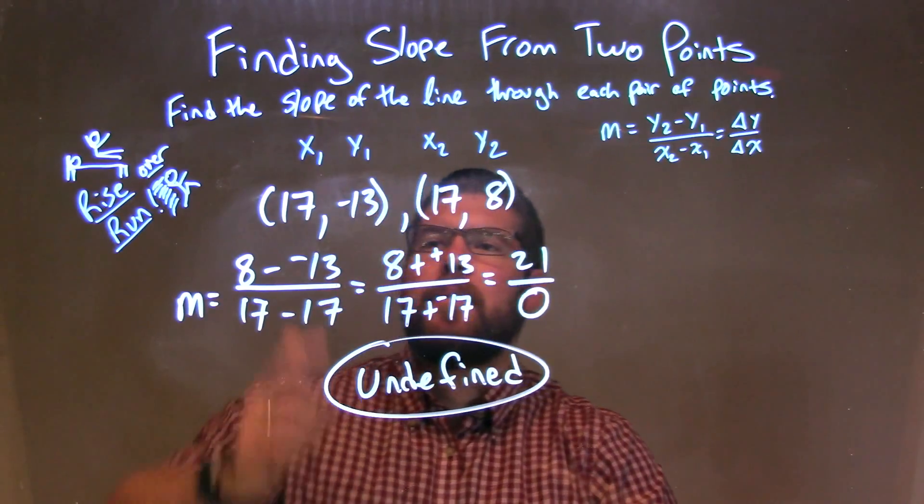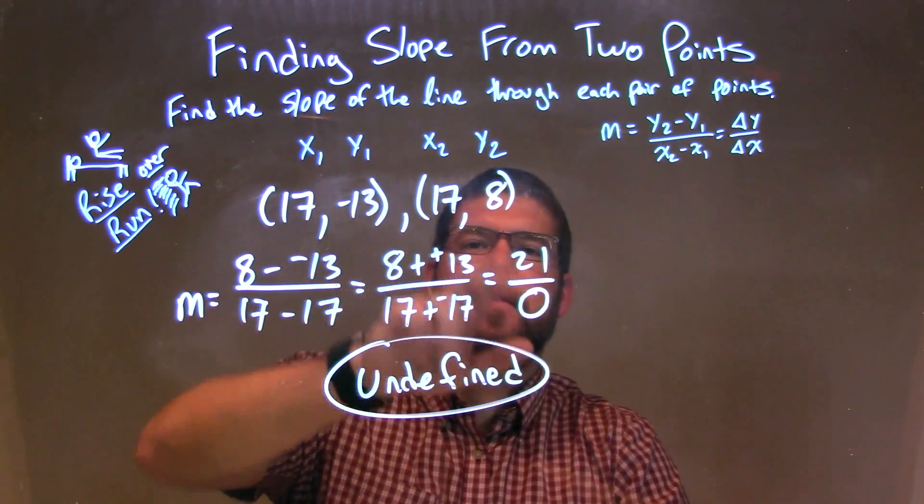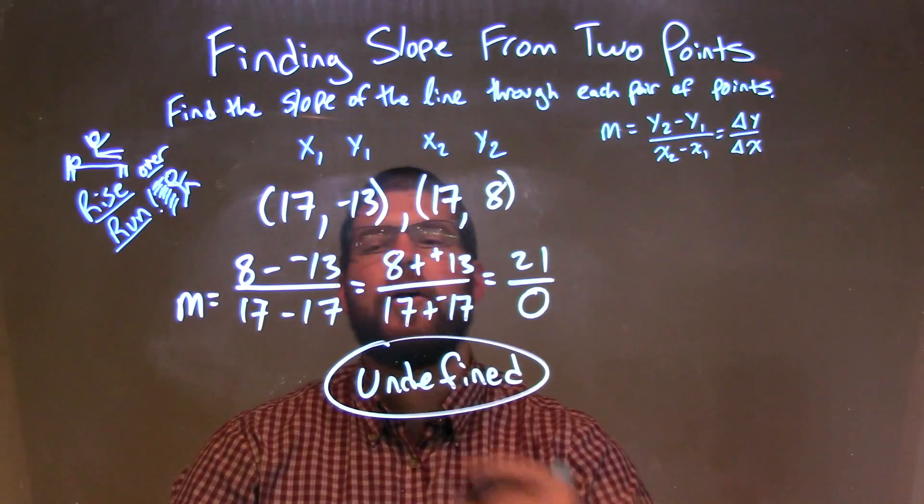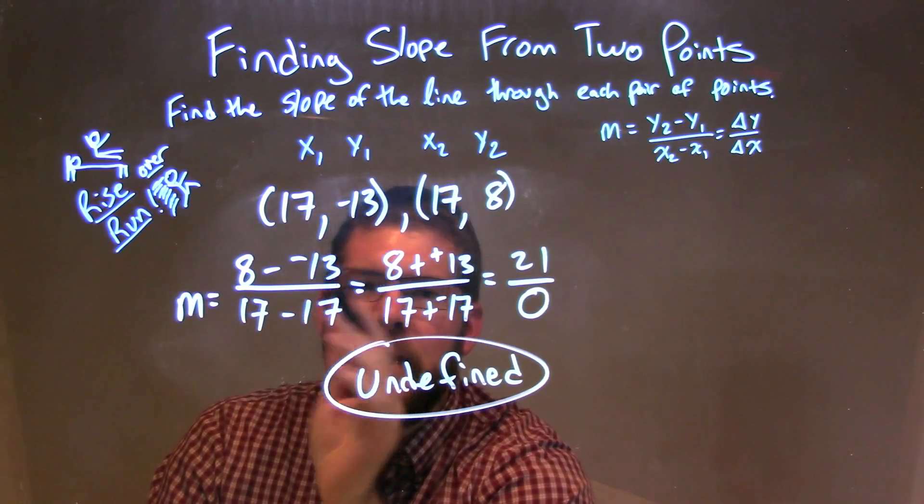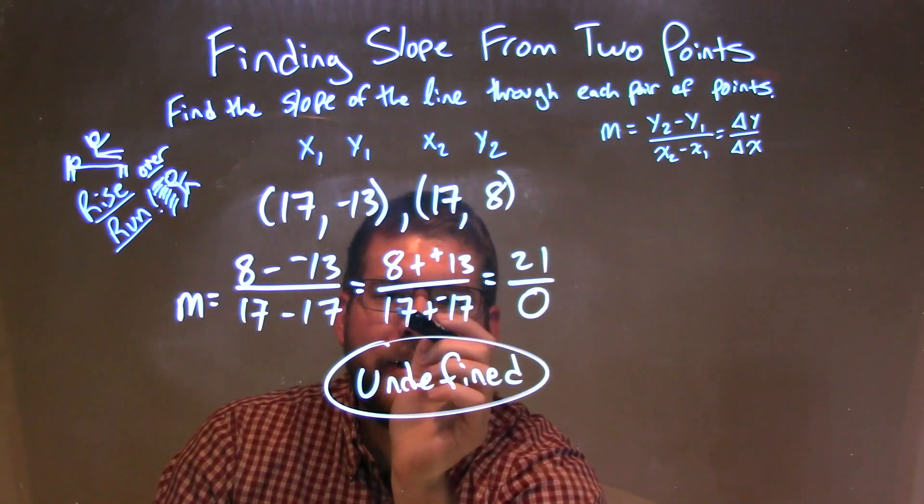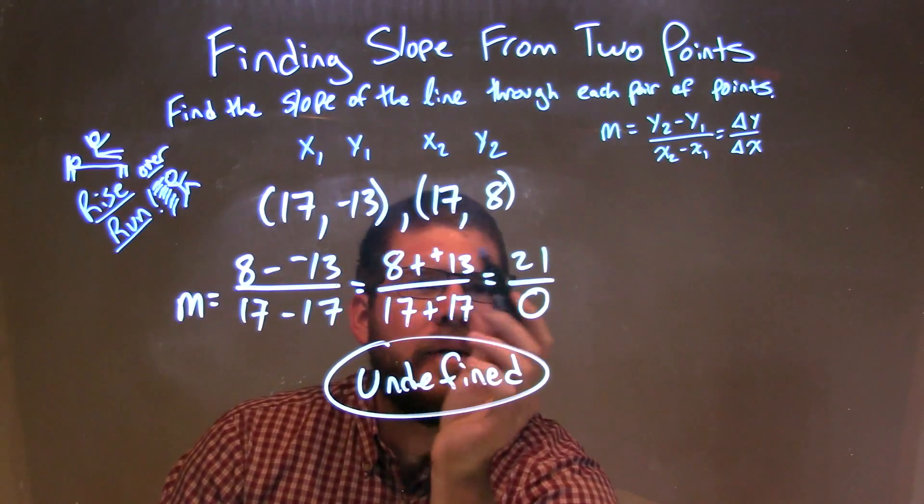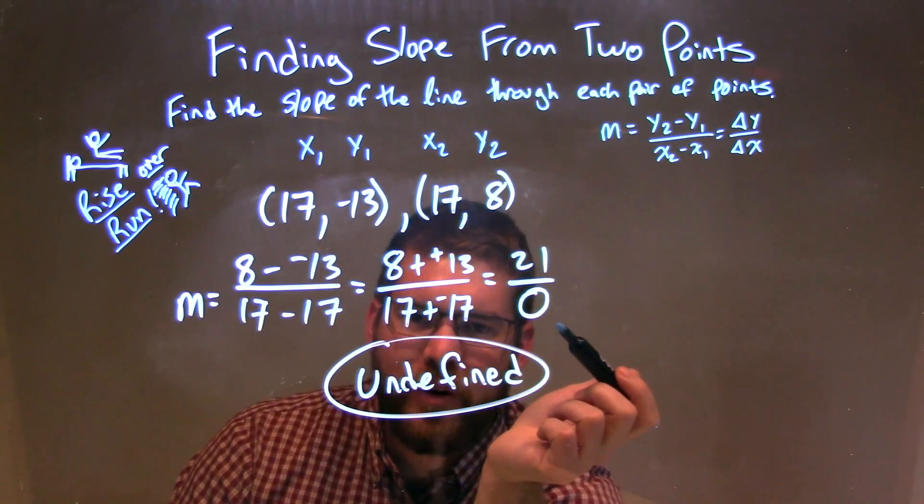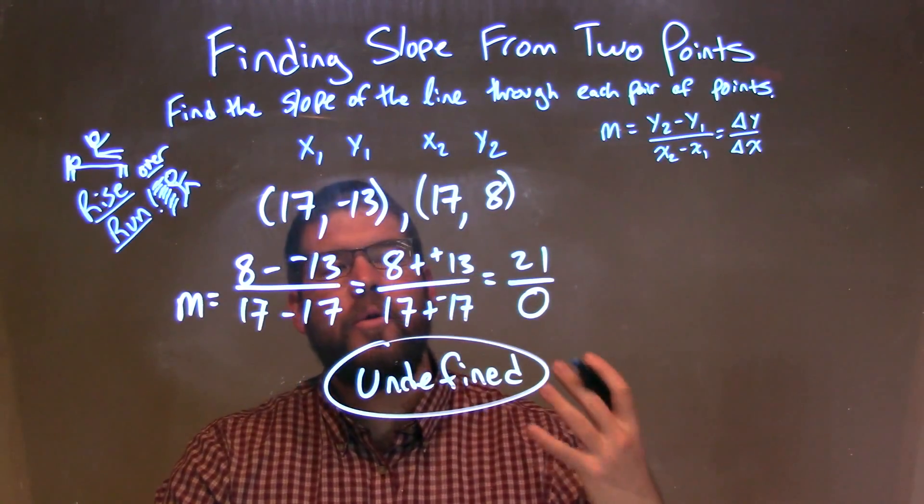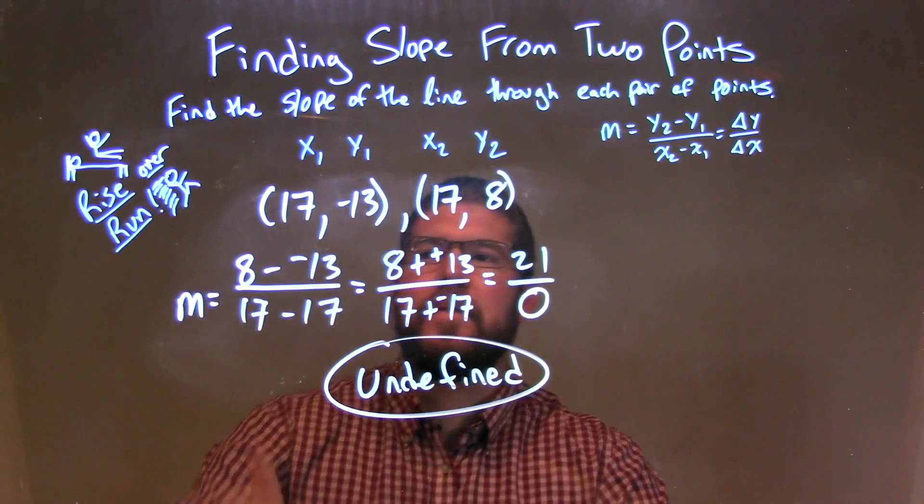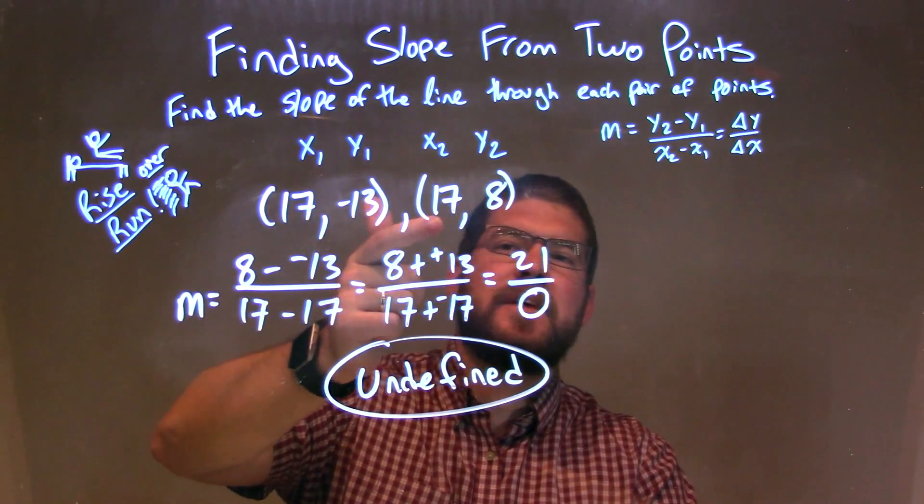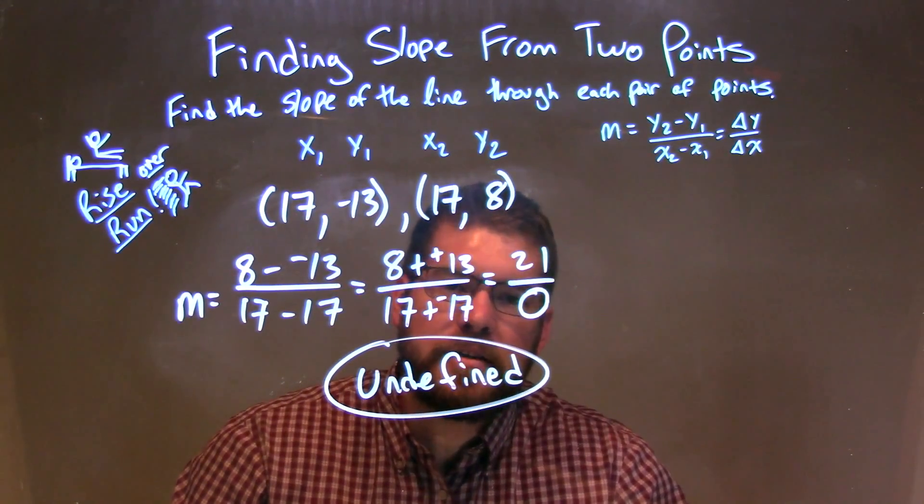So again, let's recap. We have 17 and negative 13 is my first point, and 17 comma 8 is my second point. I've followed my slope formula, y2 minus y1 over x2 minus x1. I then simplify, I've got the numerator and denominator separated. And when I simplify that, I've got 21 over 0. And we divide by 0, we know that we can't do that, so we call that undefined. And so my slope here for this problem between these two points, 17 and negative 13, and 17 and 8, is undefined.